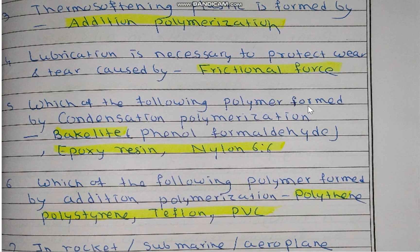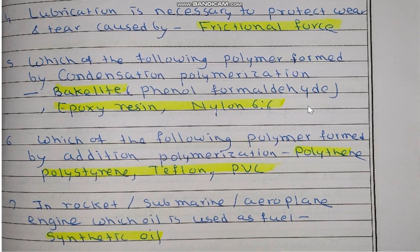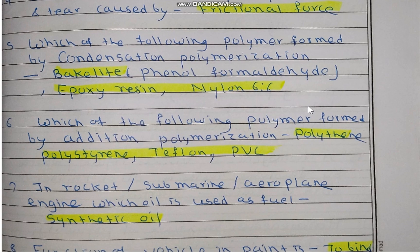Lubrication is necessary to protect wear and tear caused by frictional force — this is the definition of lubricant or lubrication. Which of the following polymers are formed by condensation polymerization? These three examples are: Bakelite, epoxy resin, and Nylon 6,6.